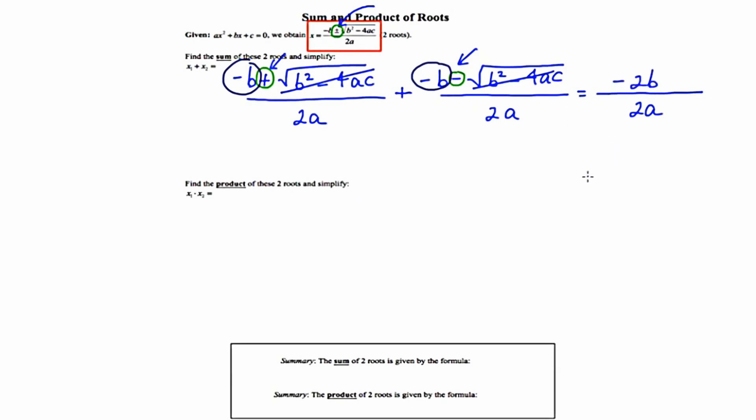Negative b plus a negative b is negative 2b. Now we have negative 2b over 2a, the twos cancel, and you're really just left with negative b over a.